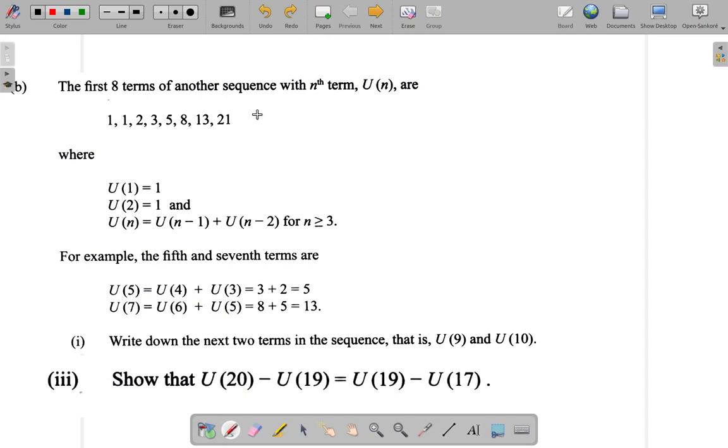Or, in other words, U20 is equal to U19 plus U18. And then U19 is equal to U19 minus 1, which is U18 plus U17. Okay.